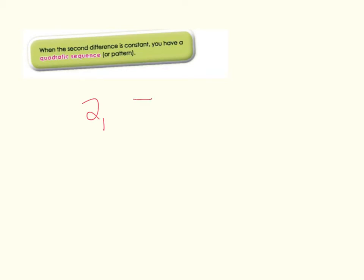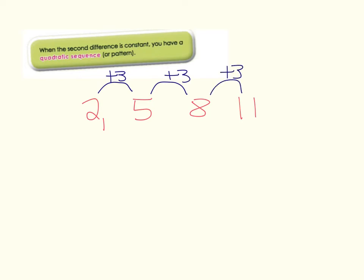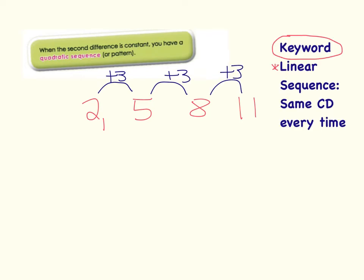We've met key terms before like a linear sequence. A linear sequence is one where you have the same common difference between terms. An example of a linear sequence would be 2, 5, 8, 11. You can see the common difference, or CD, is plus 3 each time. Another way to phrase this is that the first difference is always the same — it's always going to be plus 3.